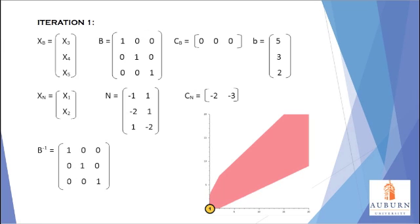We then have to assign the basic variables, which are denoted by the XB column vector, and the non-basic variables, which are denoted by the XN column vector. Since X1 and X2 are non-basic variables, they have a value of zero, so you can see graphically that the first iteration starts at the origin point in the solution.